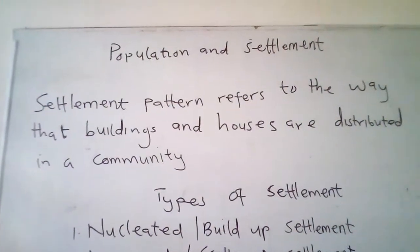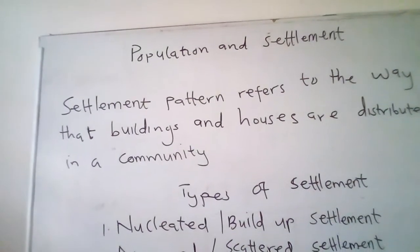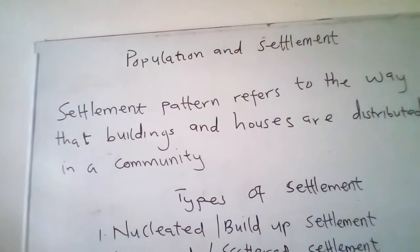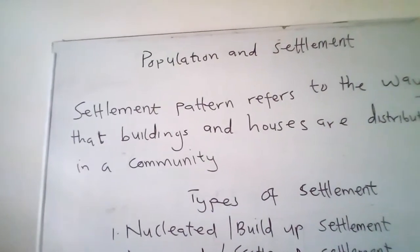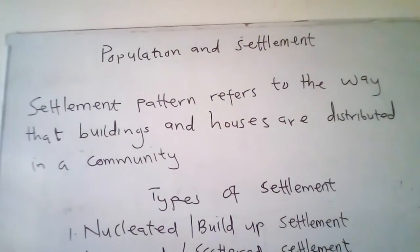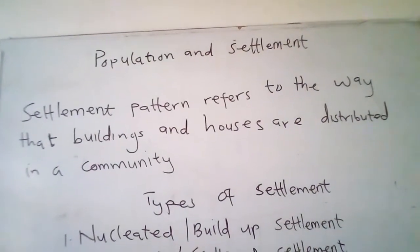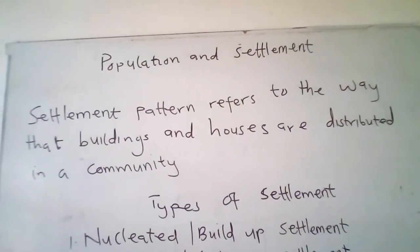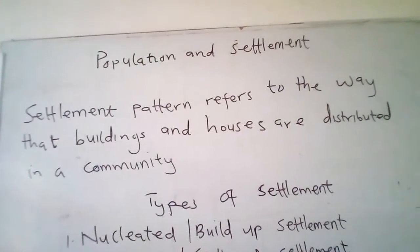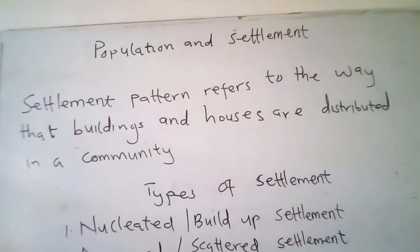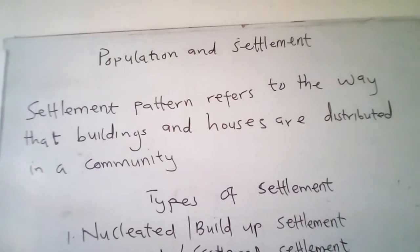In this video we learn about population and settlement in Ghana. The arrangement of houses or buildings is not in one particular order. In some places the buildings are far apart, meaning the houses are not close to each other. This is common in many villages in Ghana, and examples can be found in the northern regions.